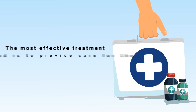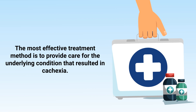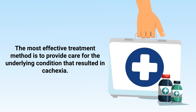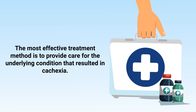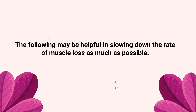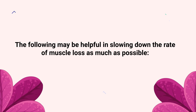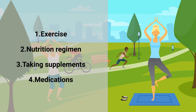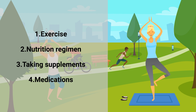Treatment for cachexia depends on the general prognosis and current signs and symptoms of each individual patient. The most common effective treatment method is to provide care for the underlying condition that resulted in cachexia in the first place. The following may also be helpful in slowing down the rate of muscle loss: exercise, a nutrition regimen, taking supplements, and certain medications such as appetite stimulants.